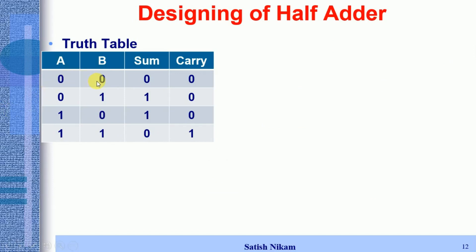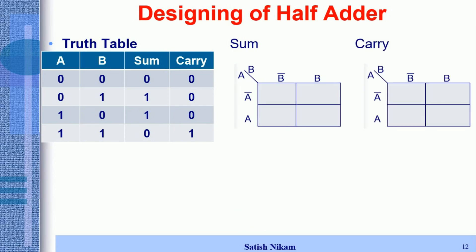The next step is to get the boolean expression from the truth table using the K-map technique. Since we have two outputs — Sum and Carry — we will have two K-maps: one for Sum and one for Carry. The pattern of the K-map is decided by the number of inputs; with two inputs, 2 raised to 2 equals 4, so there should be 4 cells in each K-map. We write A-bar, A, B-bar, B for both the Sum and Carry K-maps.